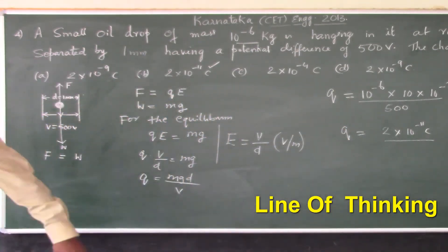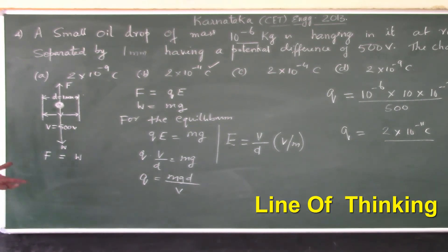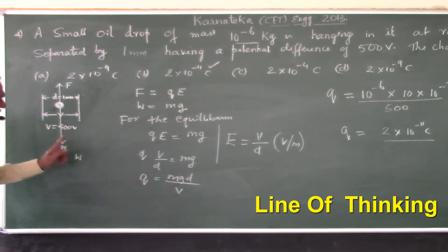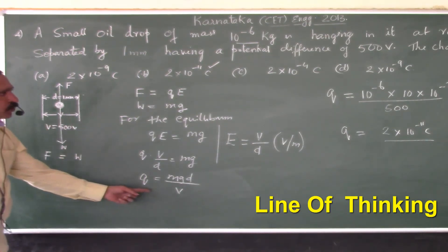What is the thinking line in this problem? Whenever a charged particle is suspended in an electric field, it is always balanced by the electrostatic force which is Q into E and the weight. The weight is supported towards the base. For equilibrium, F should be equal to W, and equating we can get the charge, or sometimes we may be asked to find the potential difference between the plates. Again, we can use the same formula.